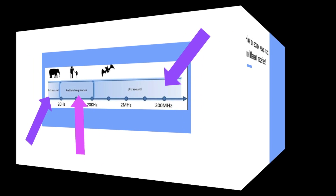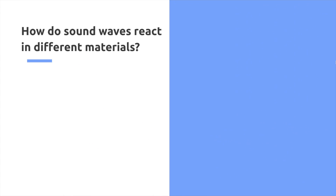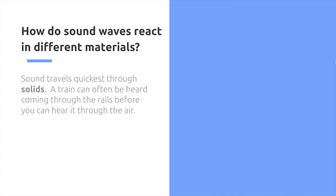How do sound waves react in different materials? Sound travels quickest through solids — a train can often be heard coming through the rails before you can hear it through the air.